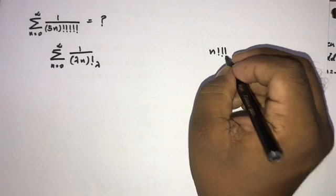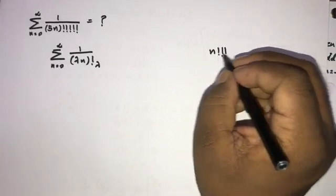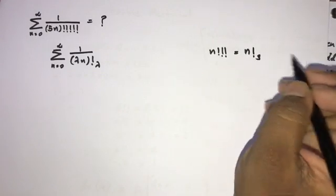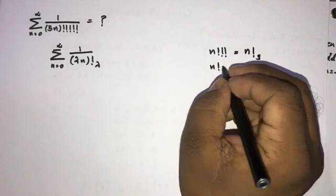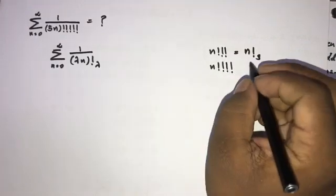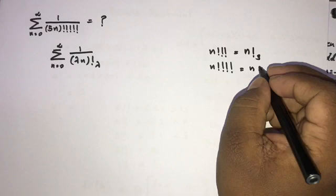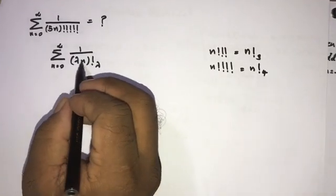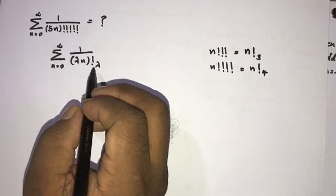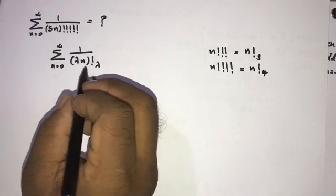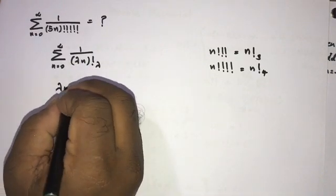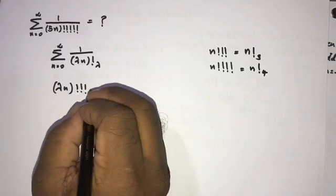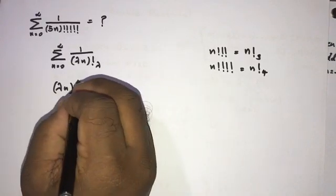To clarify the notation: n factorial 3 times means n!⁽³⁾, the 3-multifactorial. Similarly, n factorial 4 times means n!⁽⁴⁾. So in general, (lambda·n) multifactorial lambda uses this same notation.